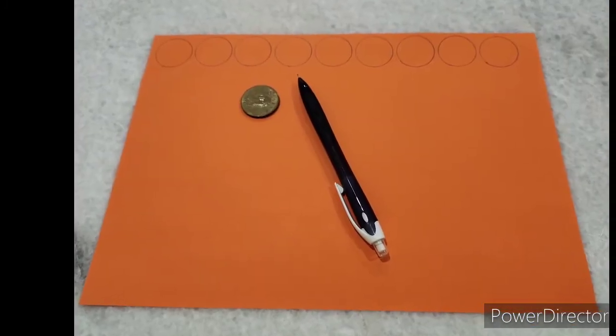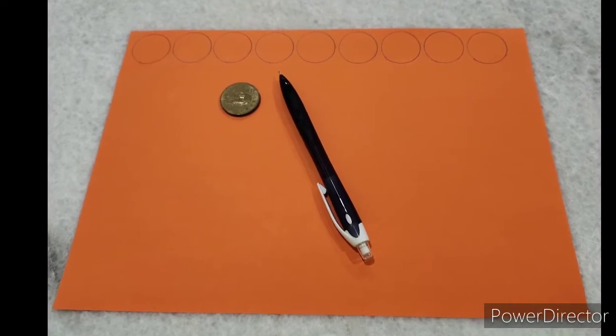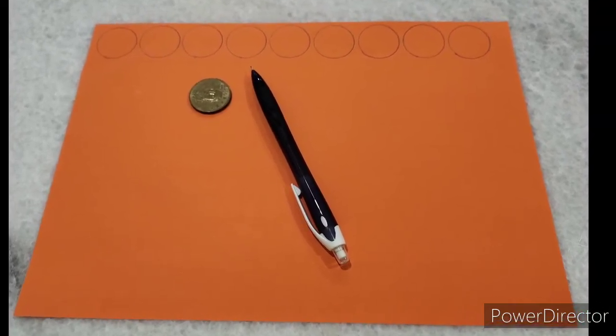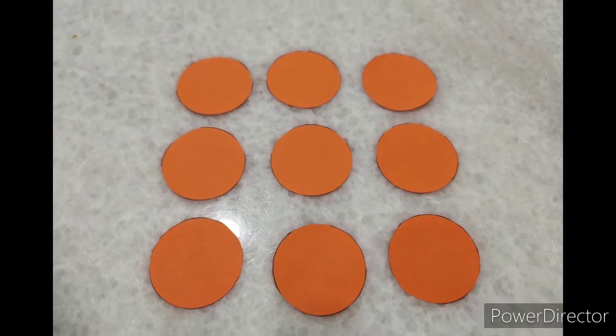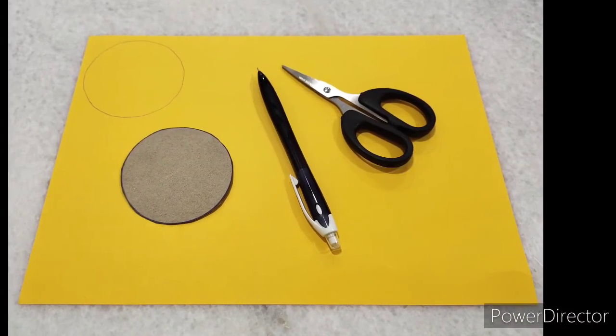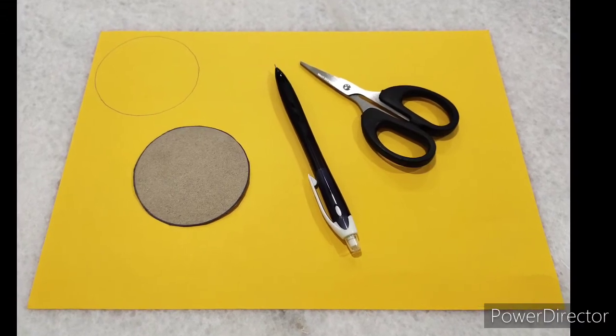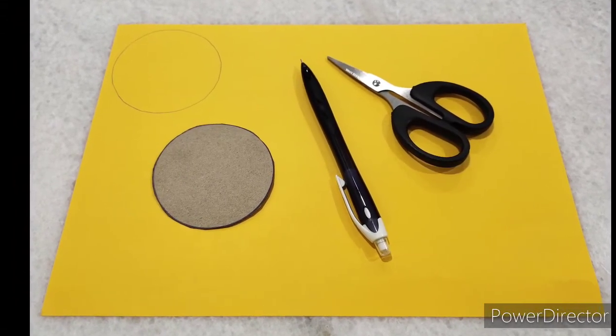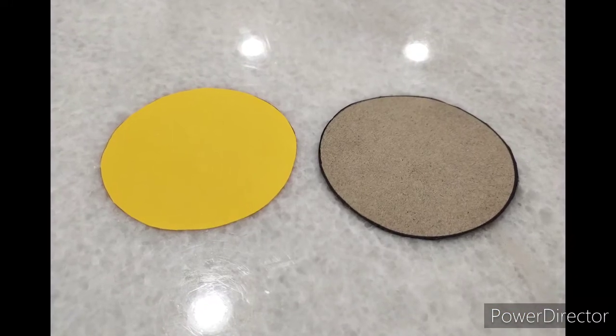Now, take a piece of color paper and use the bigger coin to draw some circles. Cut out the circles, like this. Take a different color paper and use the thick paper circle to draw a circle. Cut out the circle, like this.